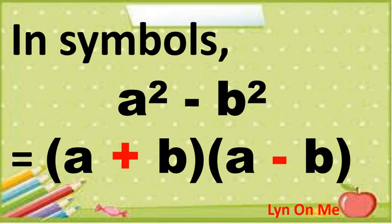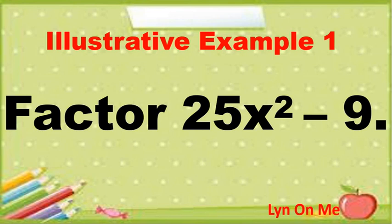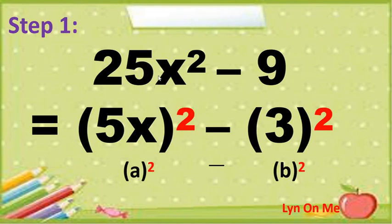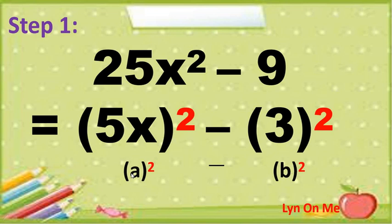To fully understand this concept, let us have an example. Factor 25x squared minus 9. For the first step, express each term of the given binomial into a square of a monomial. So 25x squared can be written as the square of 5x, and 9 can be written as the square of 3. Since 5x times 5x equals 25x squared and 3 times 3 equals 9, let us represent 5x as the value of a and 3 as the value of b.